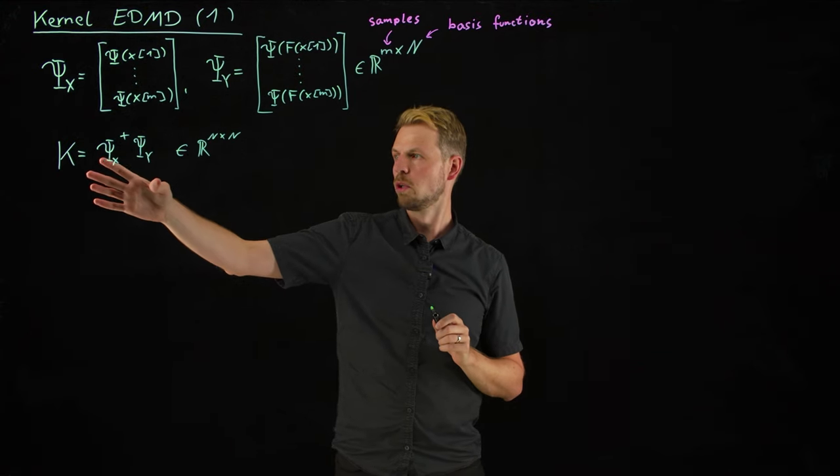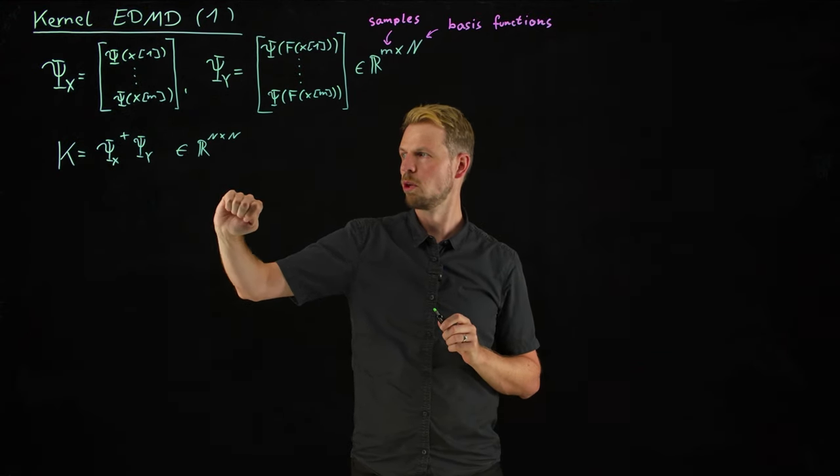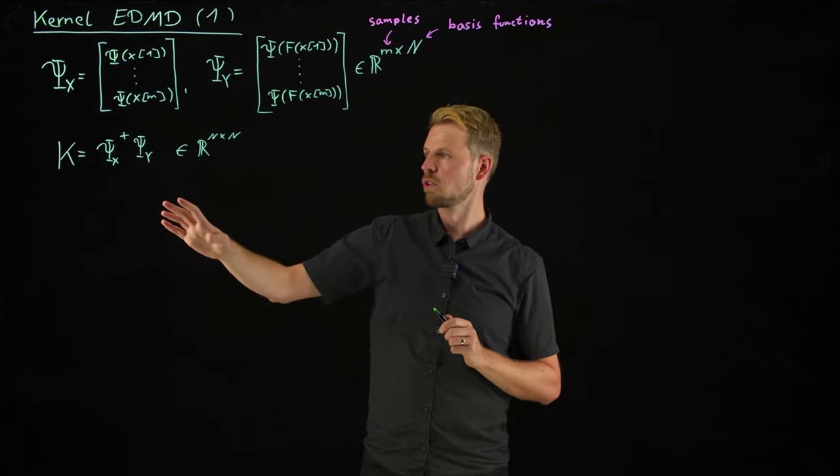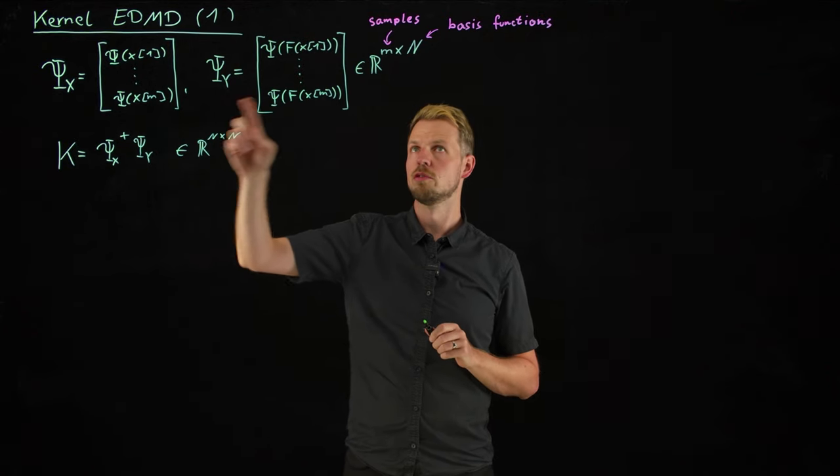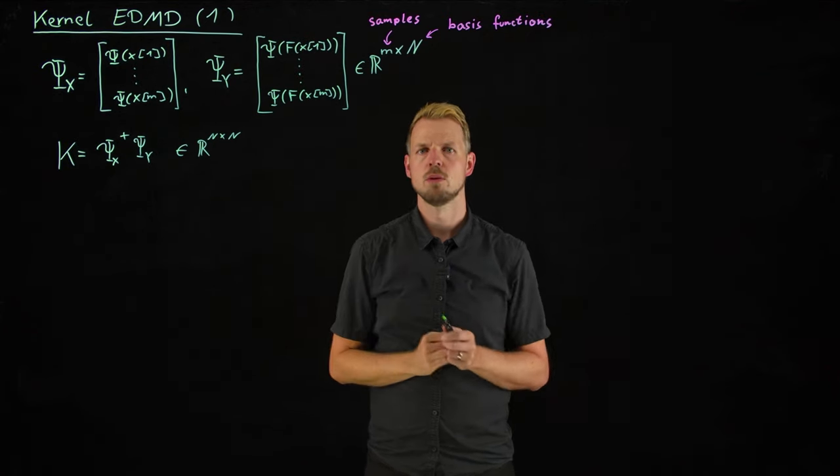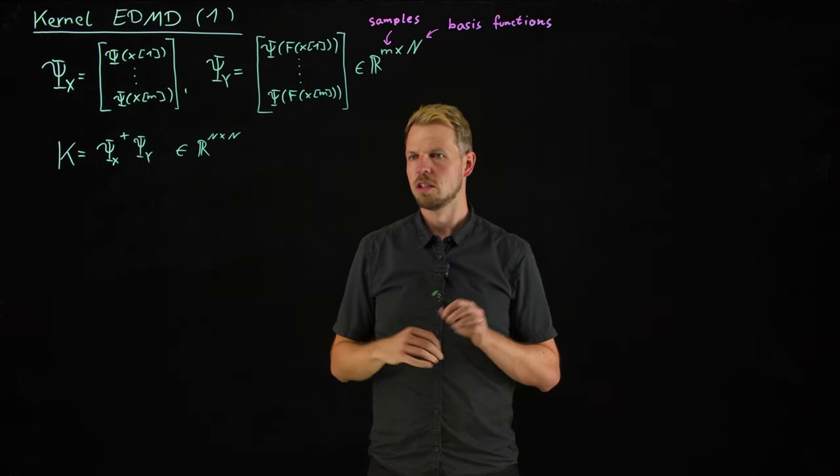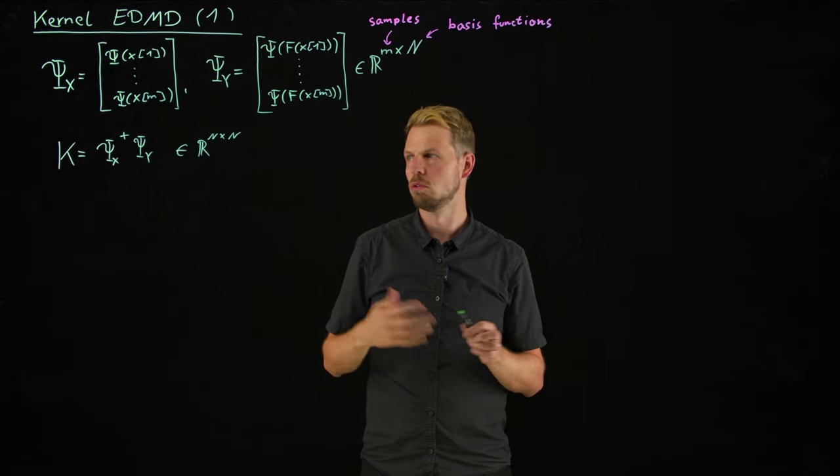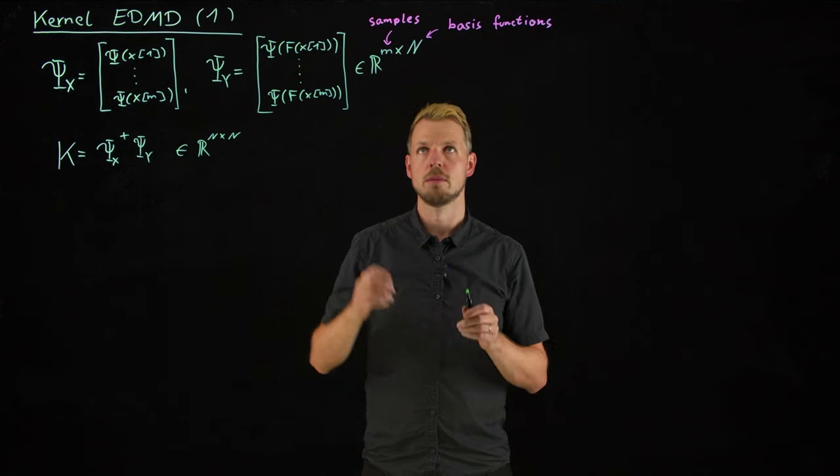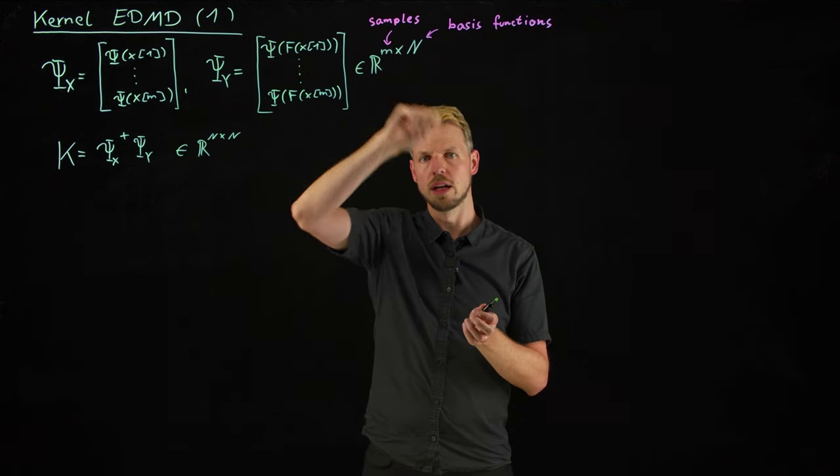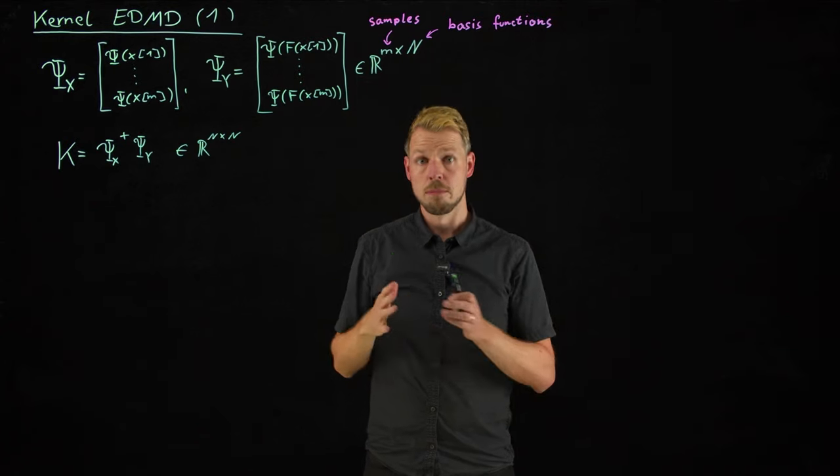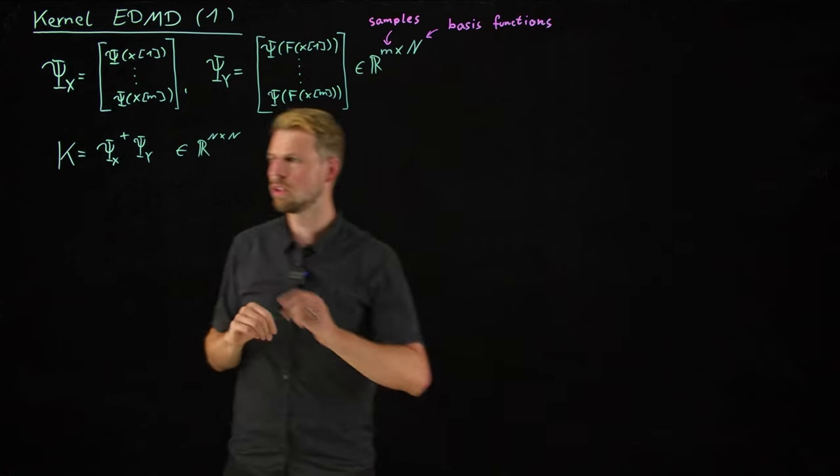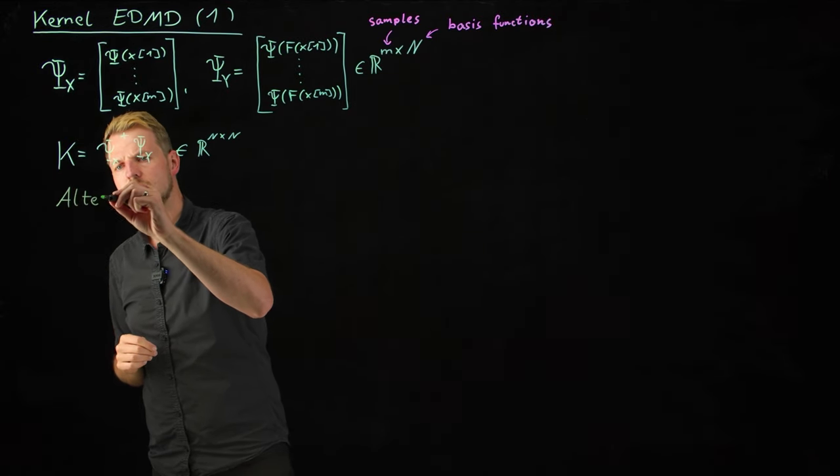And then computing the Koopman operator is this straightforward linear regression problem, the pseudo-inverse of the first feature matrix times this feature matrix. And so what you see is that this involves the pseudo-inverse of an m by n matrix. And maybe we are in a situation where we have a small system, let's say an ODE with a couple of degrees of freedom, and we lift them to monomials of a certain degree, so maybe 20, 30 dimensional space, which would be the capital N is not very large. But we do have a lot of samples, so m is much, much larger than n.